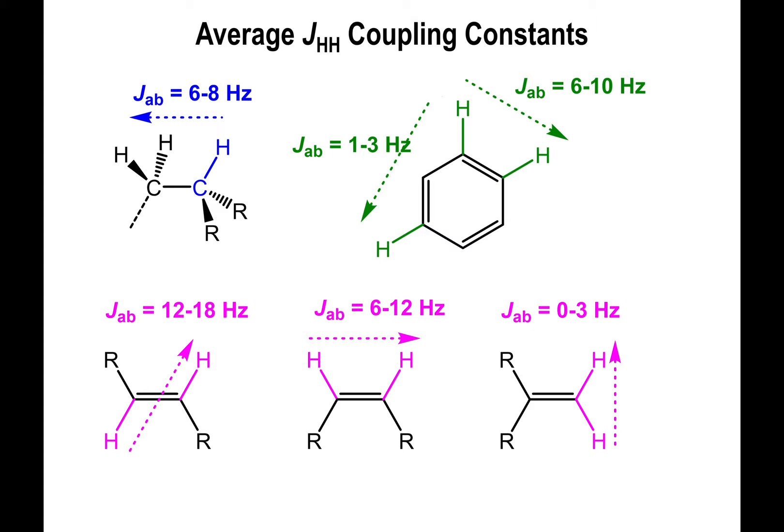The coupling constants represent the energy difference in terms of frequencies — notice all the values are in Hertz. In terms of frequency, how much is the separation between the peaks as they split? So when you split the peak into a doublet, what's the difference between the peaks that make up the doublet? If you split the peak into a triplet, what's the difference between the individual peaks that make up that triplet, and so on?